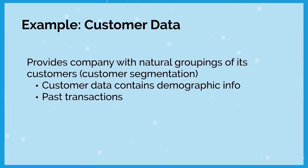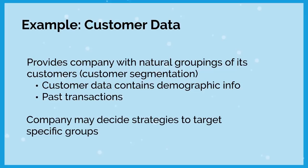We could use unsupervised learning to look at customer data, providing a company with natural groupings of its customers. In the business world, this is called customer segmentation. Customer data contains demographic info and past transactions, and we can use that information to decide strategies to target specific groups or tailor advertising to those groups. For example, Jack in the Box might learn they have a large group of customers who get the munchies late at night and come in past 10 o'clock, and target those individuals.